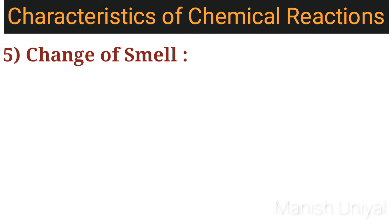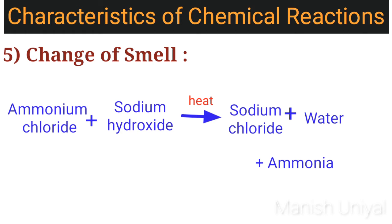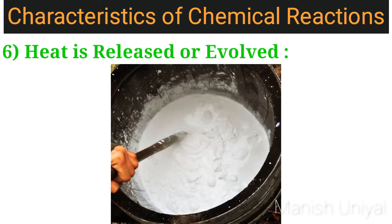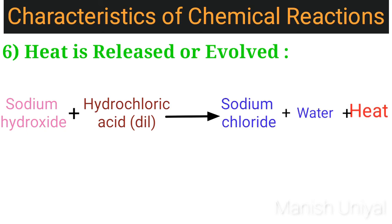The fifth characteristic is change of smell. During some chemical reactions, a strong smell is experienced. For example, when solid ammonium chloride is heated with sodium hydroxide solution, a gas ammonia is evolved which is recognized by its strong pungent smell. The sixth characteristic is heat being released or evolved. During many chemical reactions, heat is evolved indicating the formation of product. For example, when water is added to quicklime, a large amount of heat energy is evolved. Another example is when dilute hydrochloric acid reacts with sodium hydroxide, some heat is released.